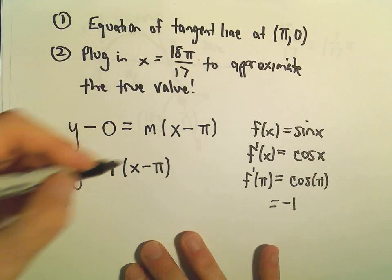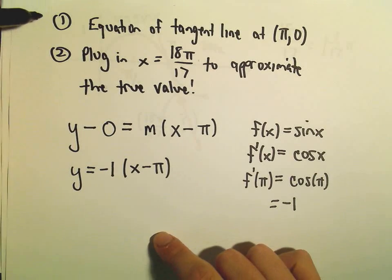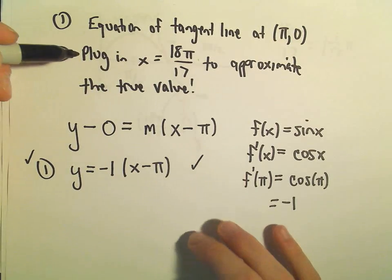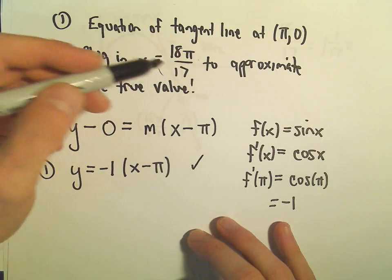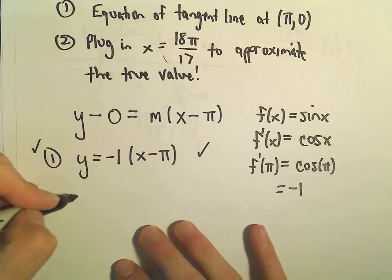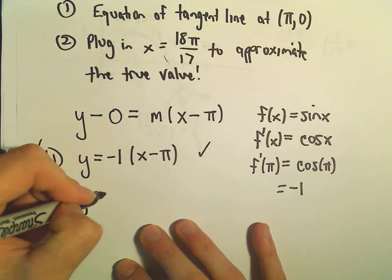So then negative 1 times x minus π. And this is now, we've now done step 1, this is now the equation of our tangent line. And now all we have to do is put in the value 18π over 17 into our line to approximate the true value.